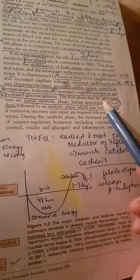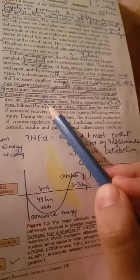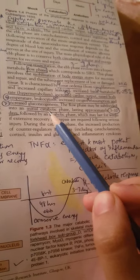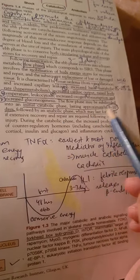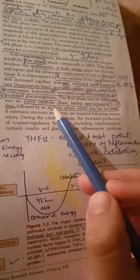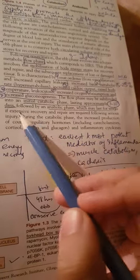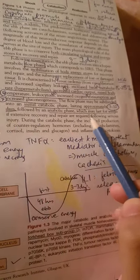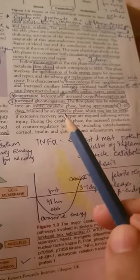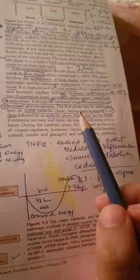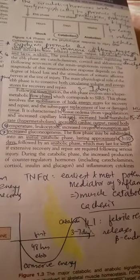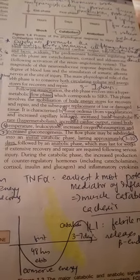We have to divide the flow phase into an initial catabolic phase which lasts for approximately 3 to 10 days, and then an anabolic phase which may last for weeks. This is the part of the MCQ I was talking about earlier - the catabolic phase of the flow phase lasts for 3 to 10 days and the anabolic phase lasts for weeks. This is the correction to the earlier statement.